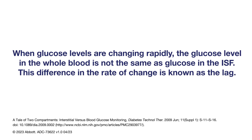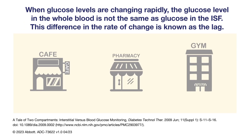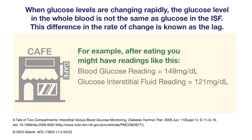Most of the time, glucose levels in the ISF and the whole blood are similar. However, when the glucose is changing rapidly — such as after meals, after insulin, or after exercise — the glucose level in the whole blood is not the same as glucose in the ISF. This difference in the rate of change is known as the lag.